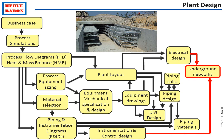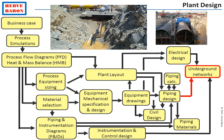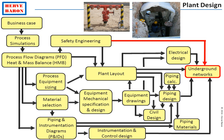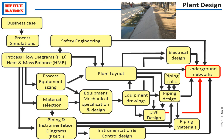Quite a few networks are located underground and the civil engineer coordinates their respective positions. The networks include the electrical and instrumentation cables, the underground piping services such as the drains and process drains, the pipe support foundations, the fire water network designed by the safety engineer, as well as the plant rainwater drainage network.